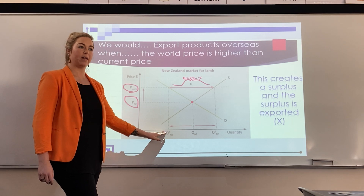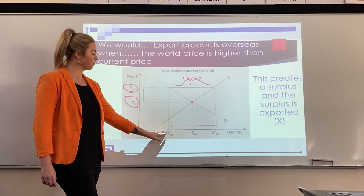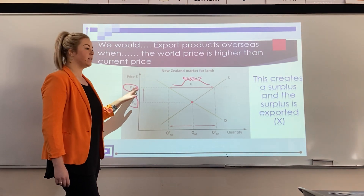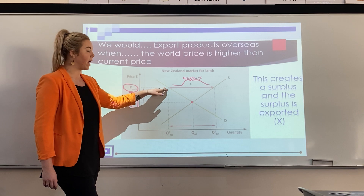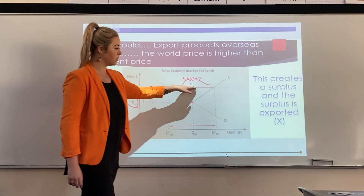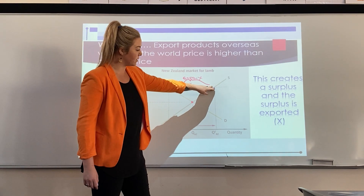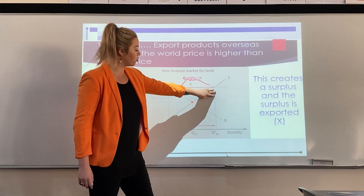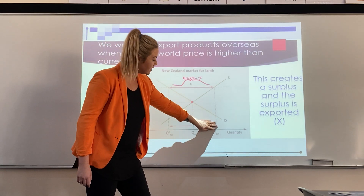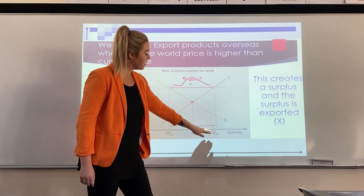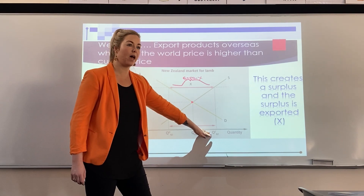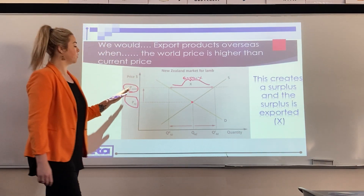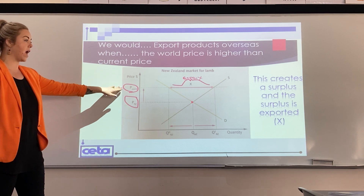That is what those labels mean. If we continue going across at the world price to where it hits the supply curve and draw our dotted lines down, this gives us the quantity supplied in New Zealand at this new price.